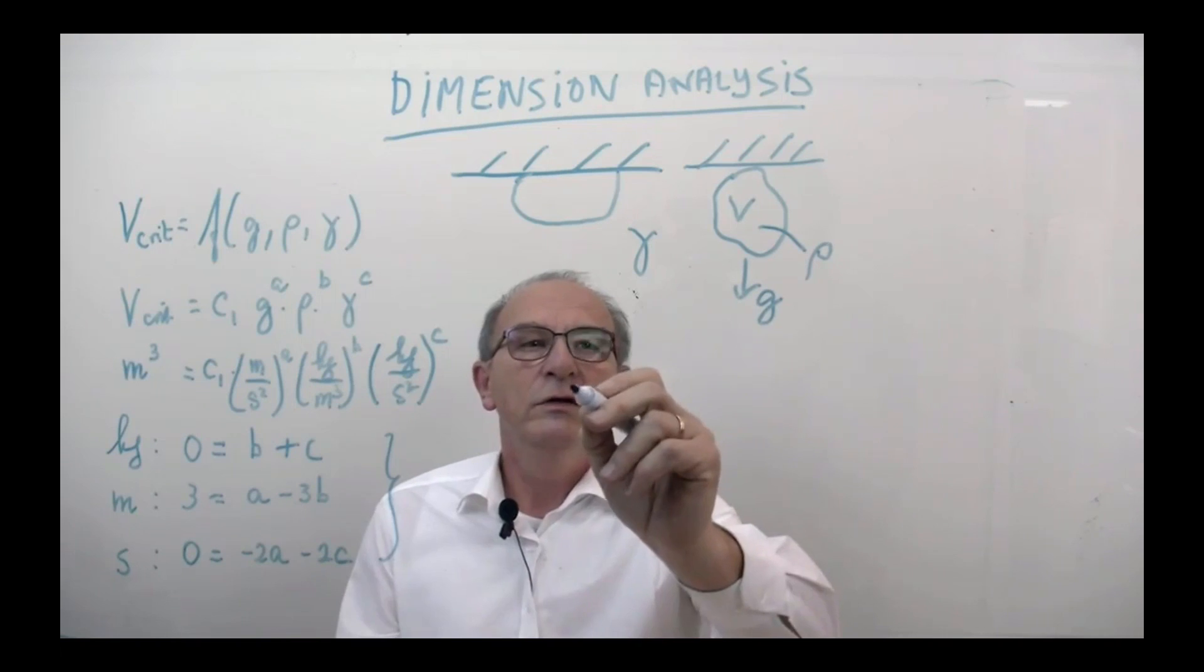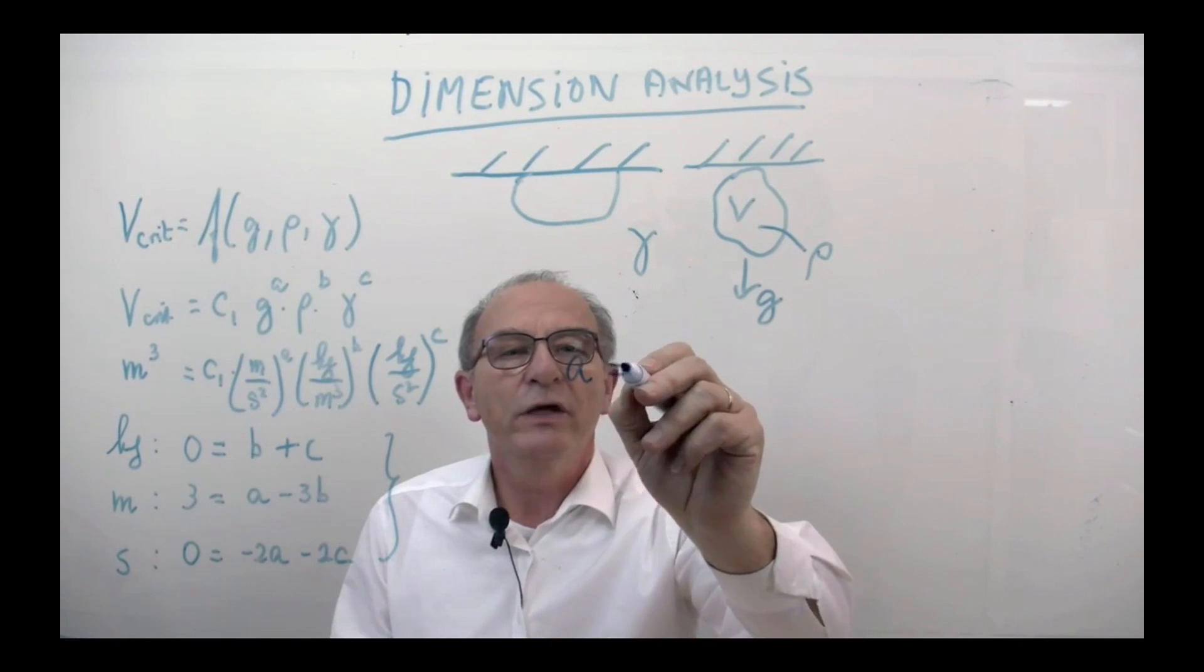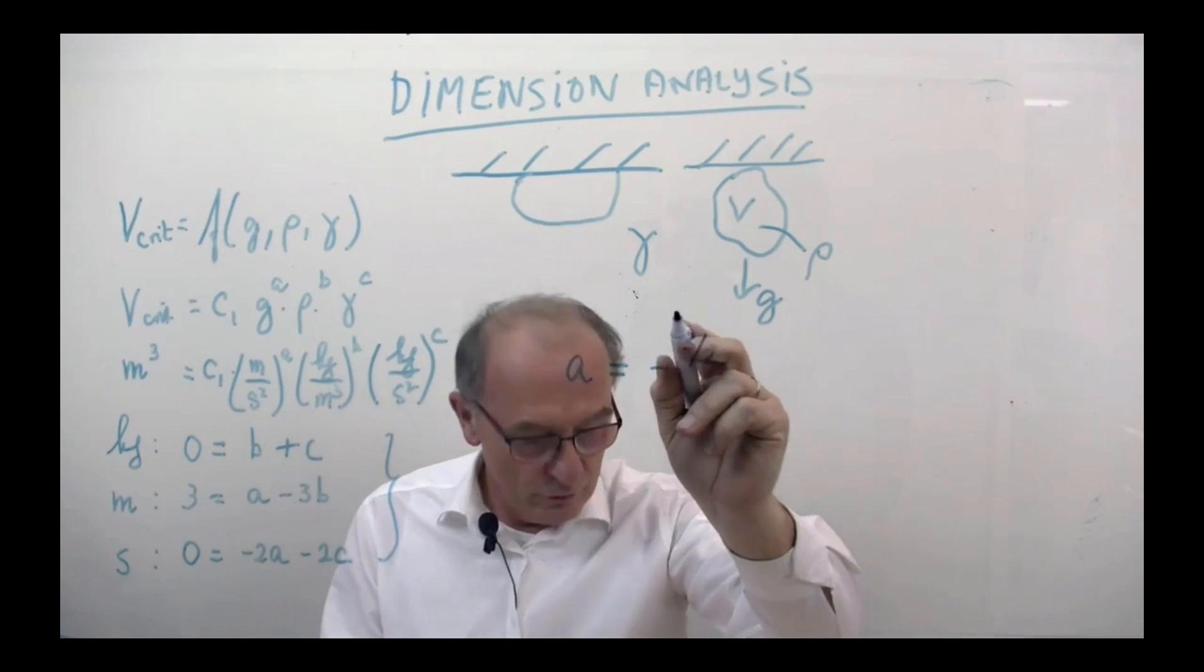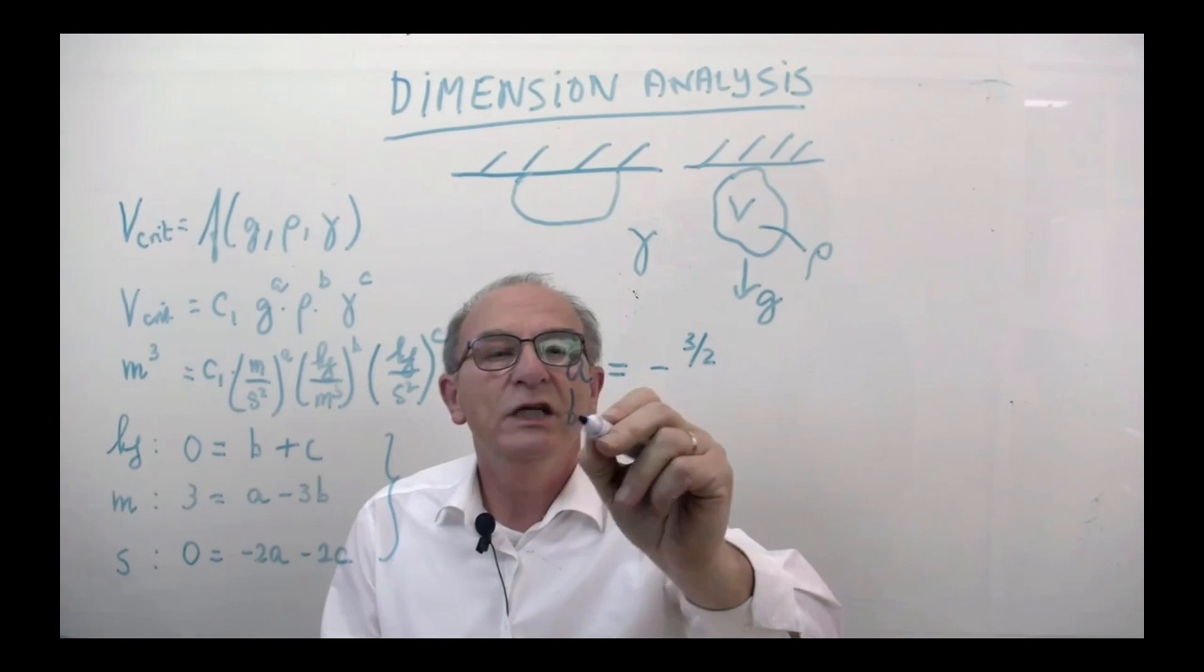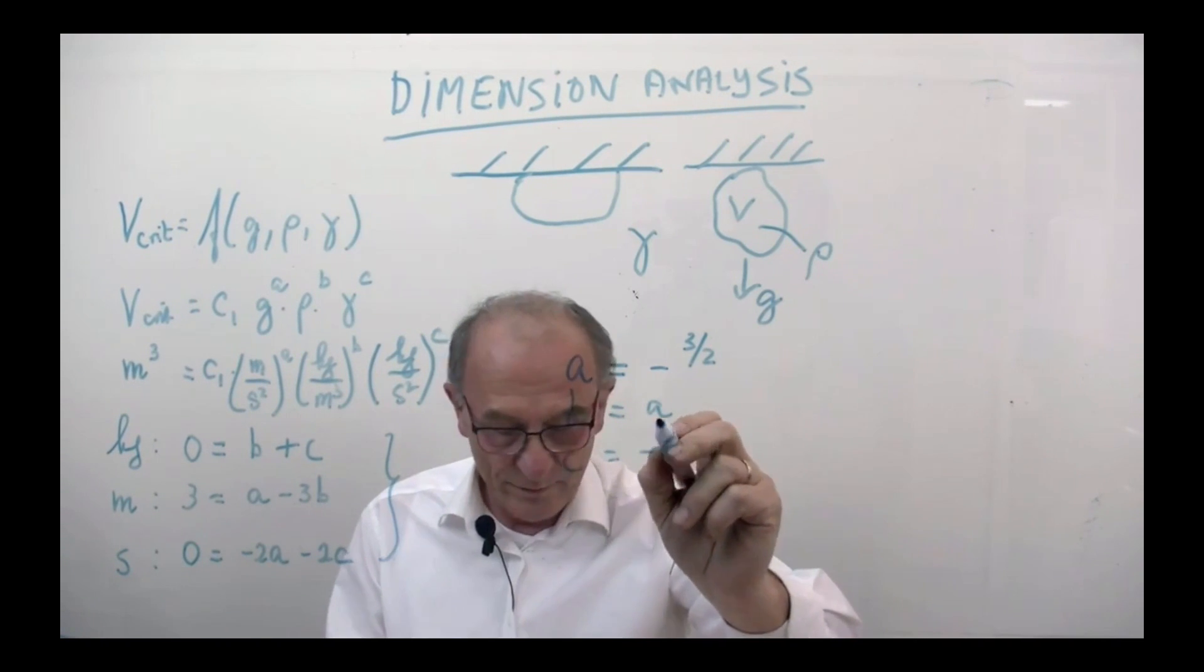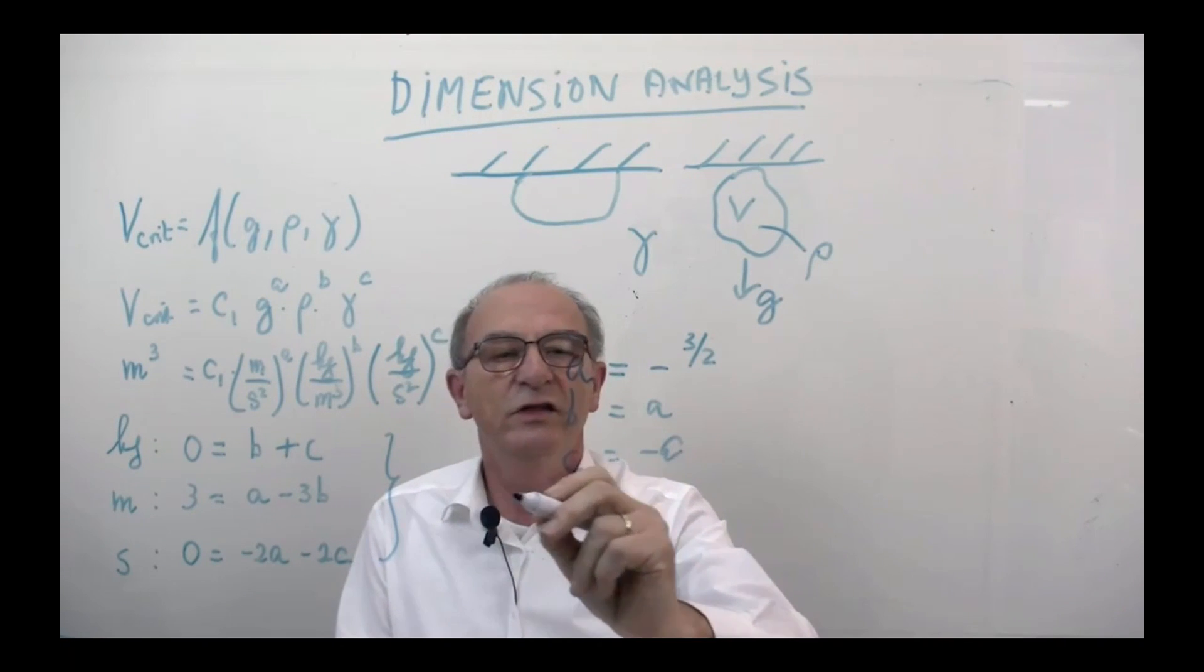If you do this, you get the following. If you derive it in the right way, you get A in this case is minus three to the two, you get B is equal to A, and C is equal to minus A. And if you rewrite and substitute it in this equation, you get the following dimensionless group.